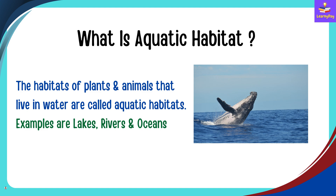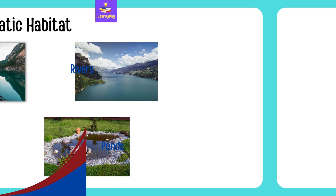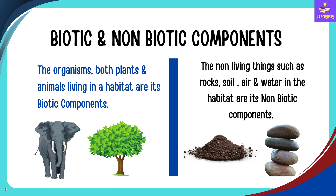The habitats of plants and animals that live in water are called aquatic habitats. Examples of aquatic habitats are lakes, rivers, and oceans. The organisms — both plants and animals — living in a habitat are its biotic components.